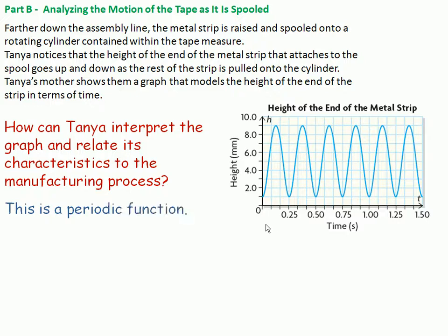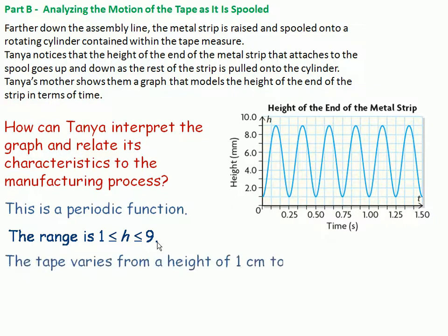So this is certainly a periodic function. There's one period right there. The range is one centimeter to nine centimeters. So that's the range of the height. One centimeter is the lowest height. Nine centimeters is the highest. What that means is that the tape varies from one centimeter above the bottom of the container that the measuring tape is spooled inside of to nine centimeters from the bottom.